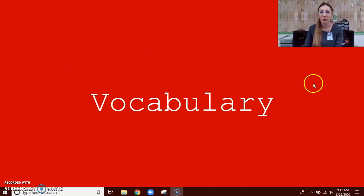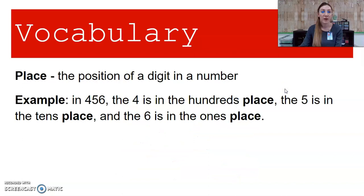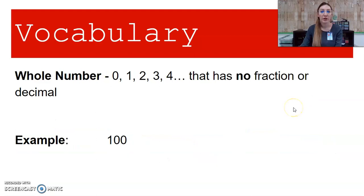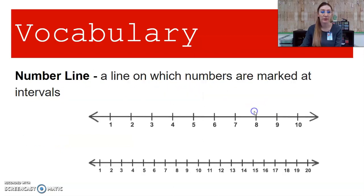Let's review our vocabulary before we get started on our mini lesson. A digit is any numeral from 0 to 9. Place is the position of a digit in a number. Value is how much a digit is worth. Whole numbers are numbers that have no fractions or decimal parts. A decimal number shows a value smaller than 1, represented as digits to the right of the decimal point. Number lines are lines on which numbers are marked at specific intervals.